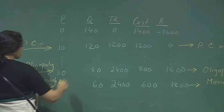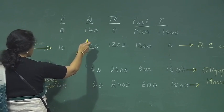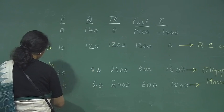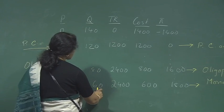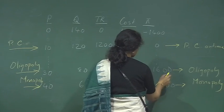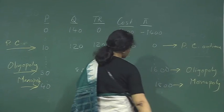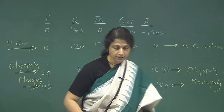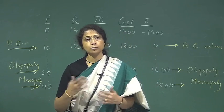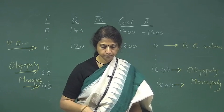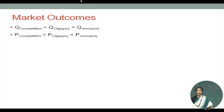As we see here, the output in case of competition is highest at 120, more than 80 which is the oligopoly outcome, and the monopoly output is 60 which is the lowest. Price is just the reverse. Similarly, in case of profit, competitive profit is 0, oligopoly profit is 1600, and monopoly profit is 1800. These are the differences in outcome when firms behave as competitive firms, monopoly firms, or oligopoly firms.